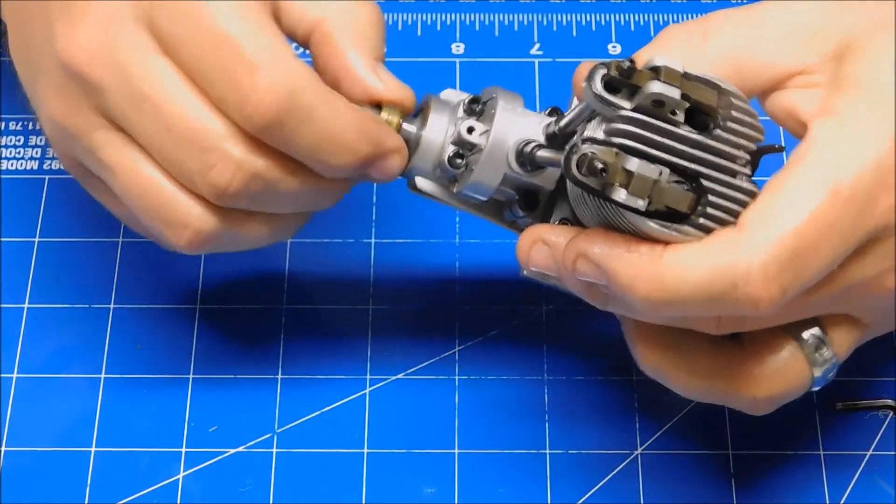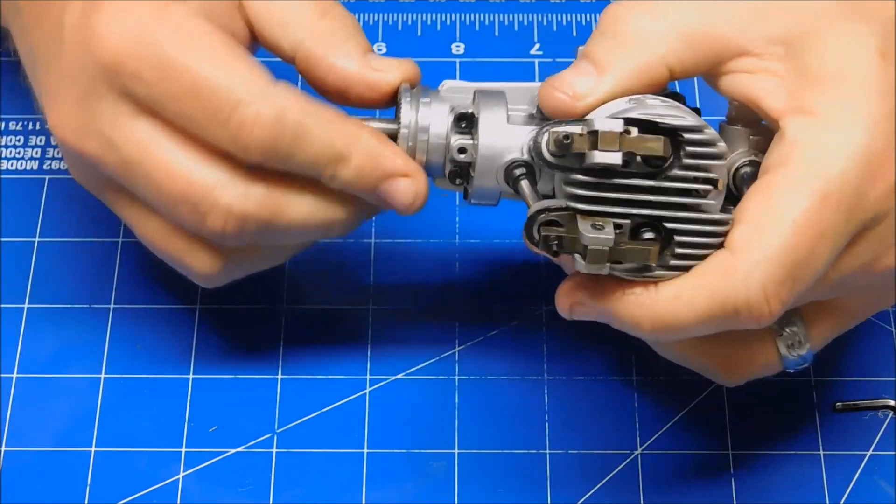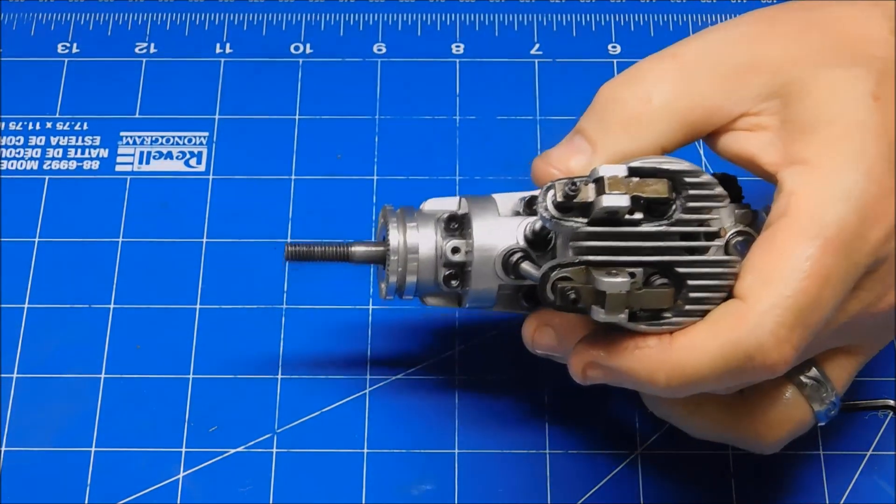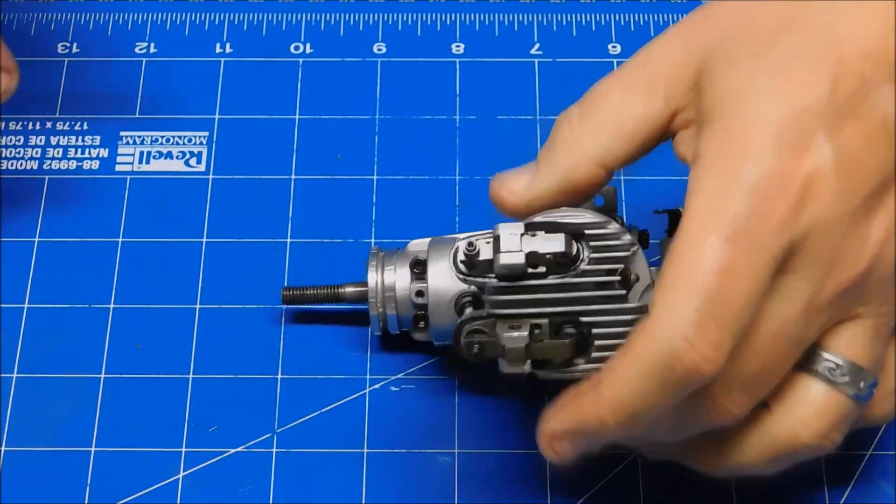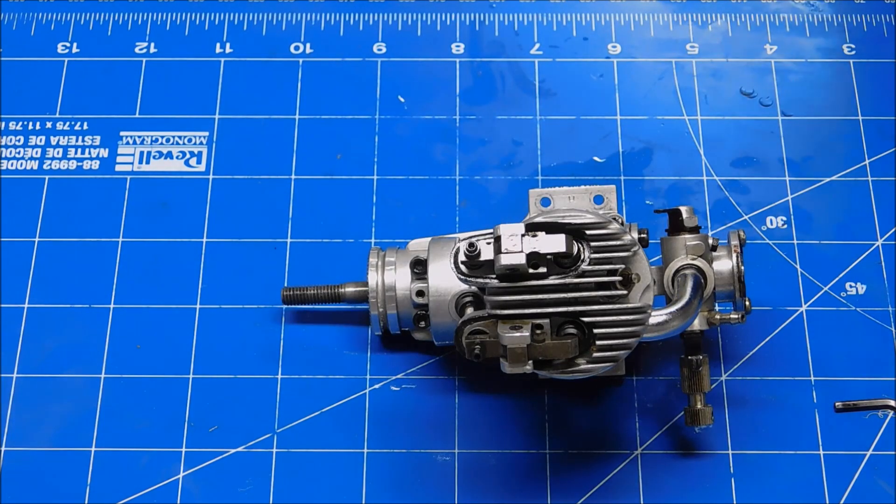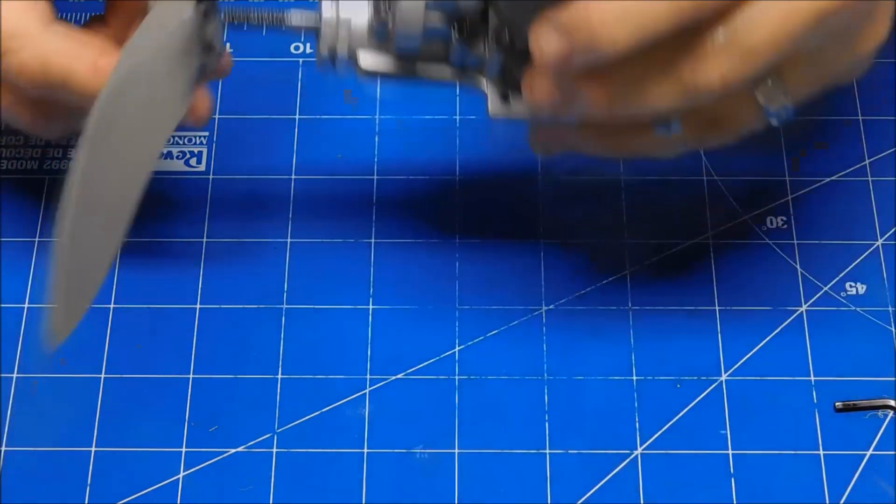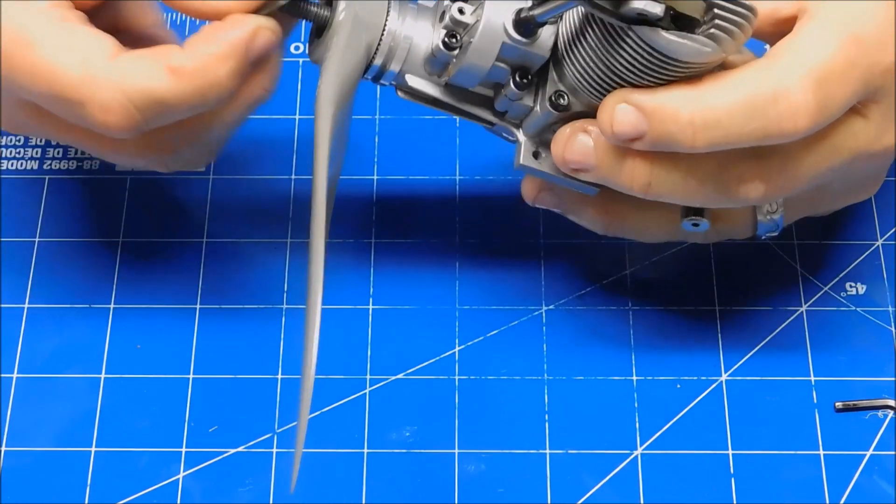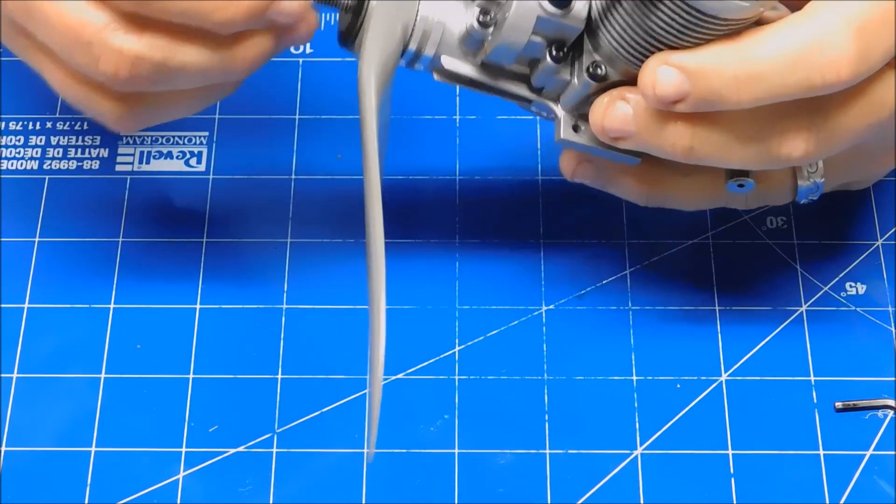So brass collar on here. I think I'll find a prop here real quick. I'm going to prop any prop, just something to put on here so I can rotate this thing through.